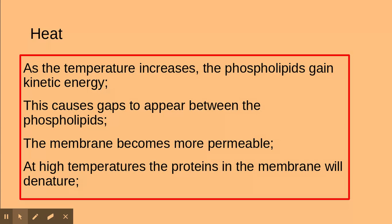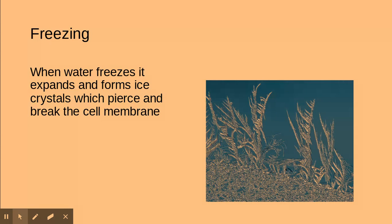You also need to be aware of a decrease in temperature and how that impacts upon membrane permeability. When water freezes it turns into ice, and ice expands — it is less dense than water. When it freezes, crystals form, and these crystals pierce and break the cell membrane. This is why when you take food from the freezer and defrost it, you get a puddle of water or juice — it's the insides of the cells leaking out because the freezing process has damaged the cell membranes.